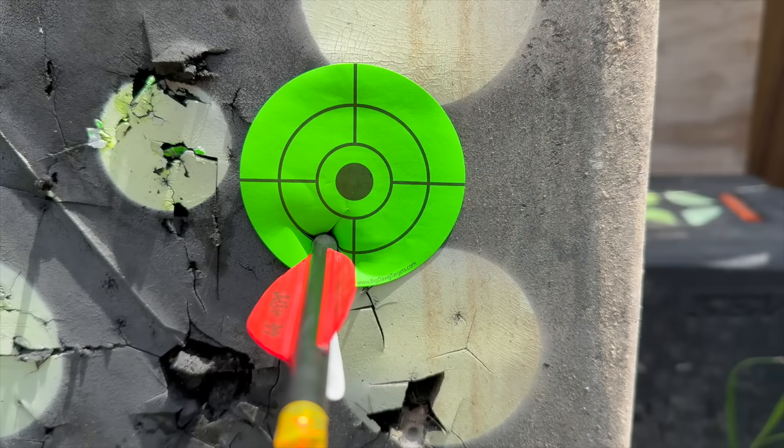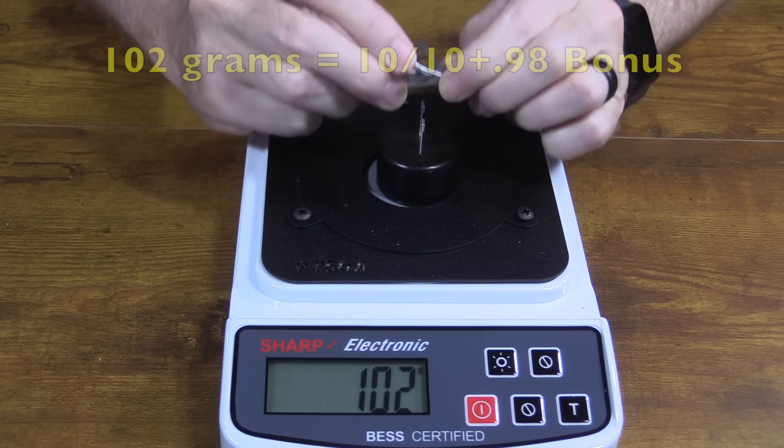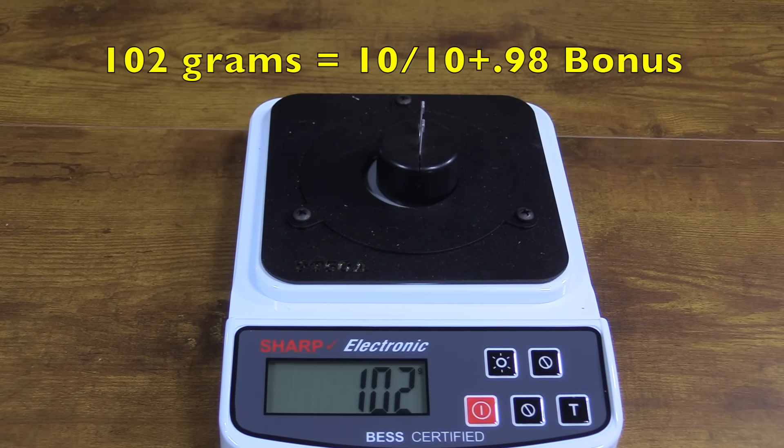The Wicked Trick got the 9 ring. It only took 102 grams of force to cut through the wire, which is a 10 on a 10-point scale, plus a bonus of .98 points for being under the threshold of 200. And it makes it one of the sharpest blades I've ever tested.